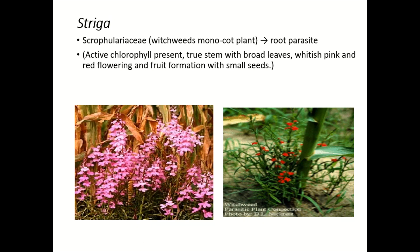Next is Striga — the witch weeds. These are monocot plants and also root parasites. They have active chlorophyll present, a true stem with broad leaves, and whitish, pink, and red flowers, with fruit formation and small seeds. That was all about these phanerogamic parasitic plants.